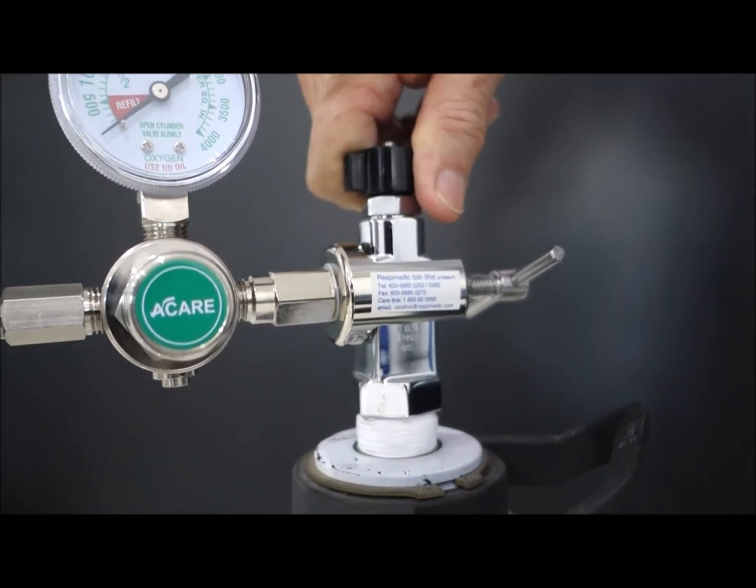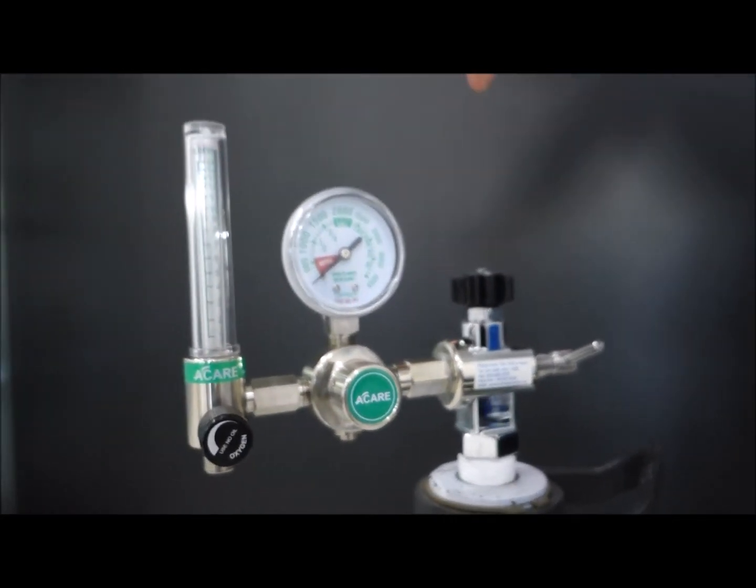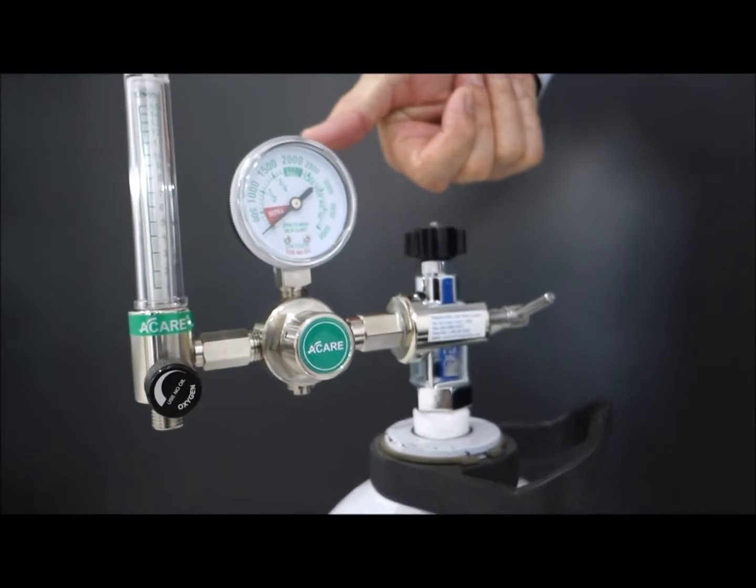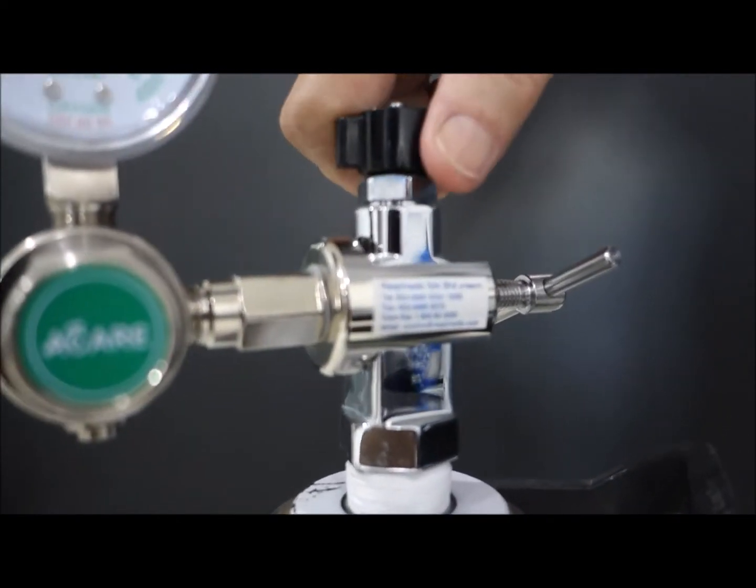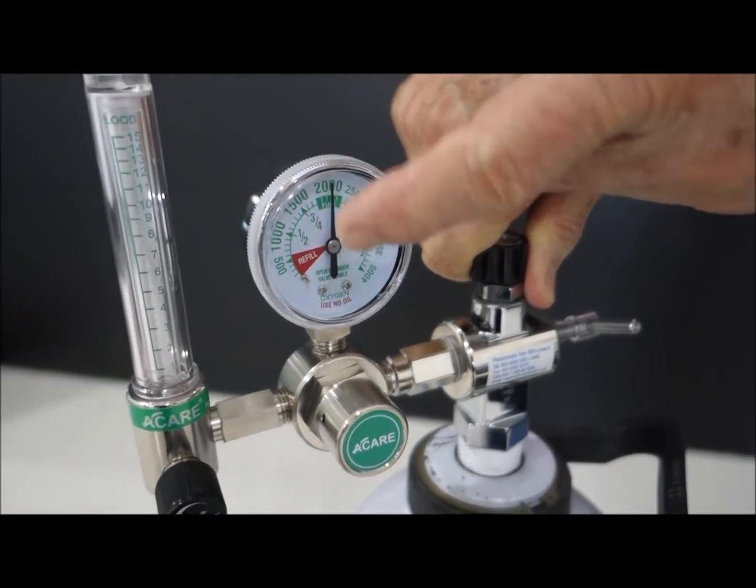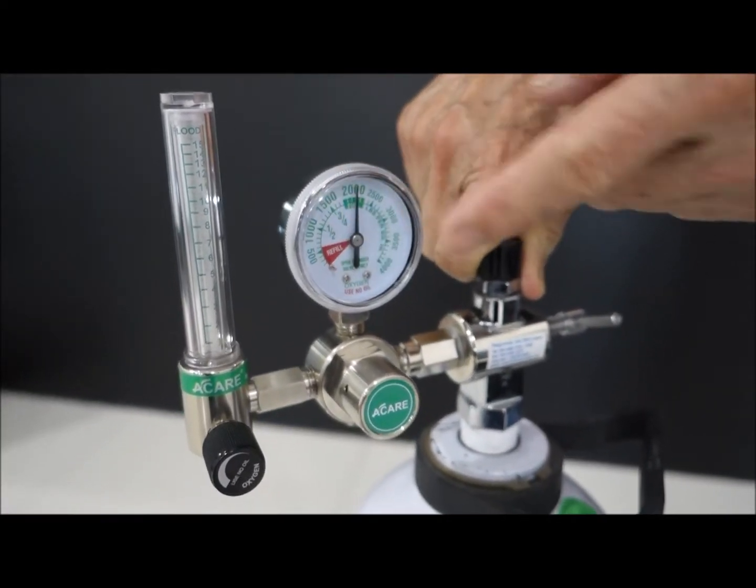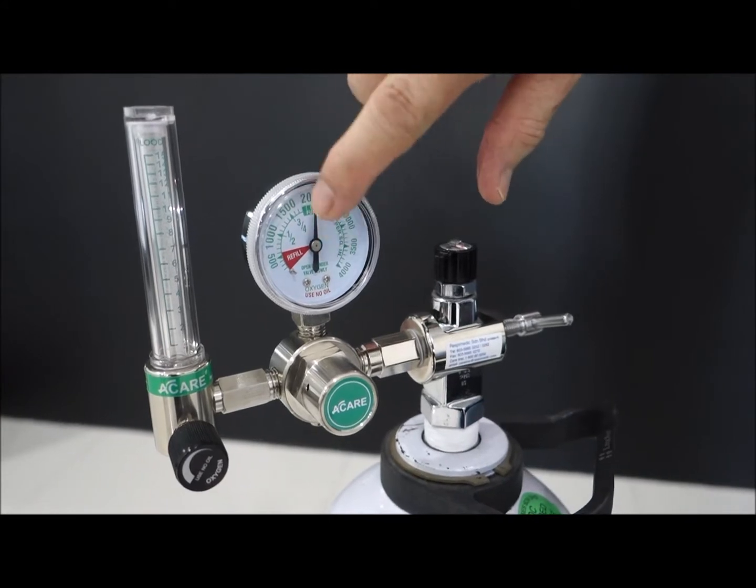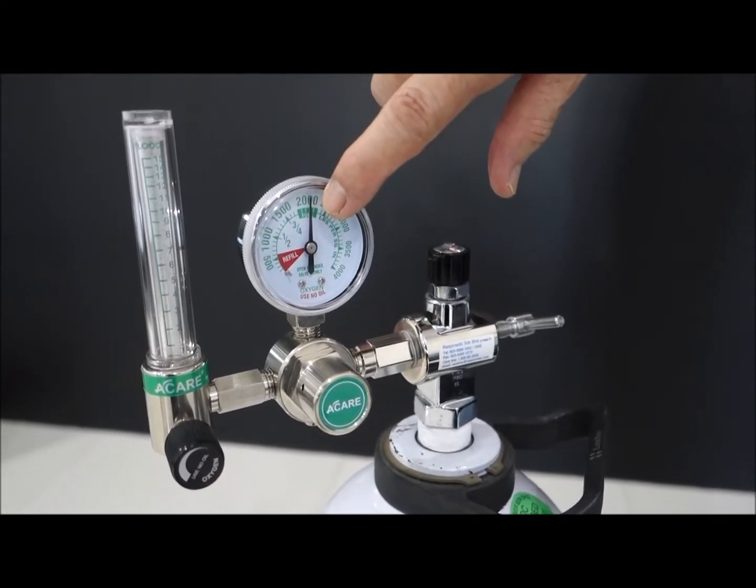The cylinder valve is turned on anti-clockwise to open the valve, and then clockwise to shut off the valve. So slowly turn anti-clockwise, and then you will see, as you turn, you will be able to see the cylinder content gauge will indicate some pressure.